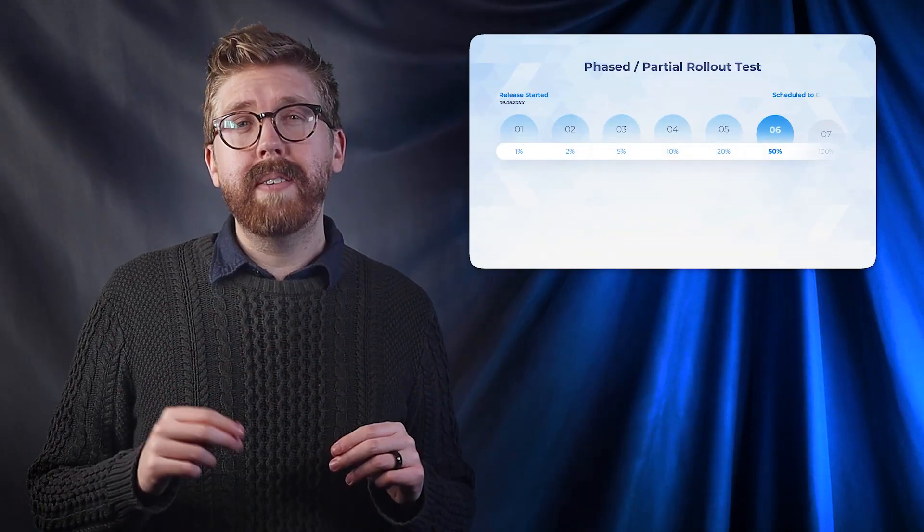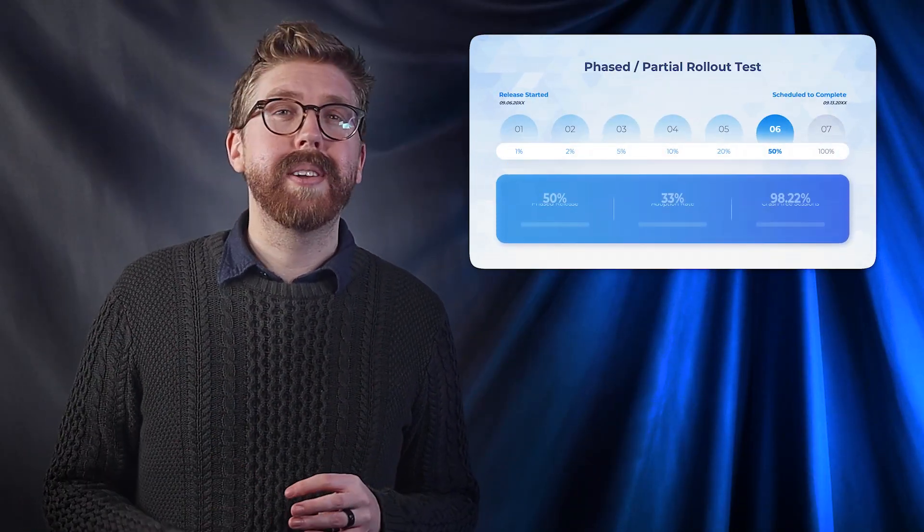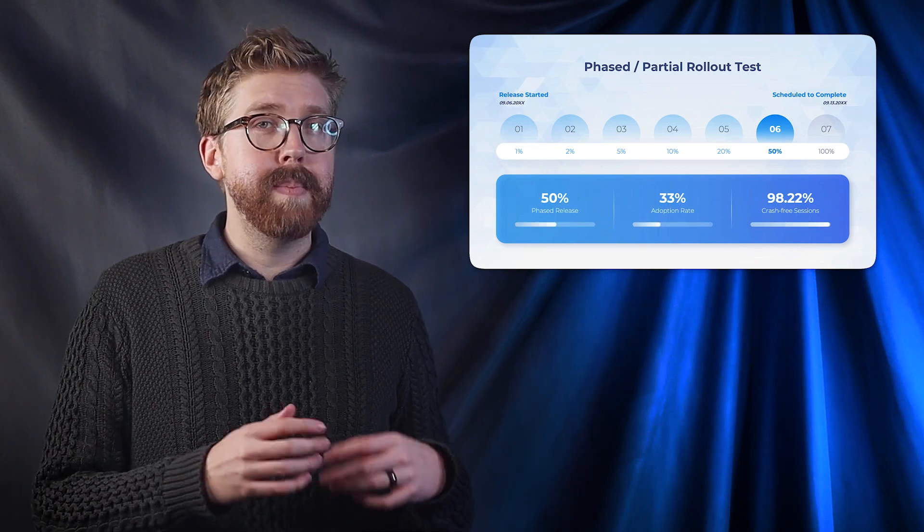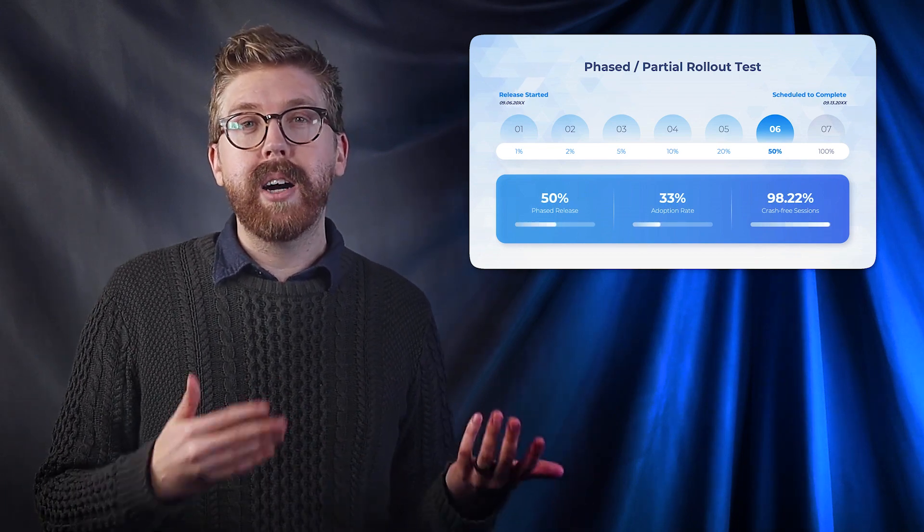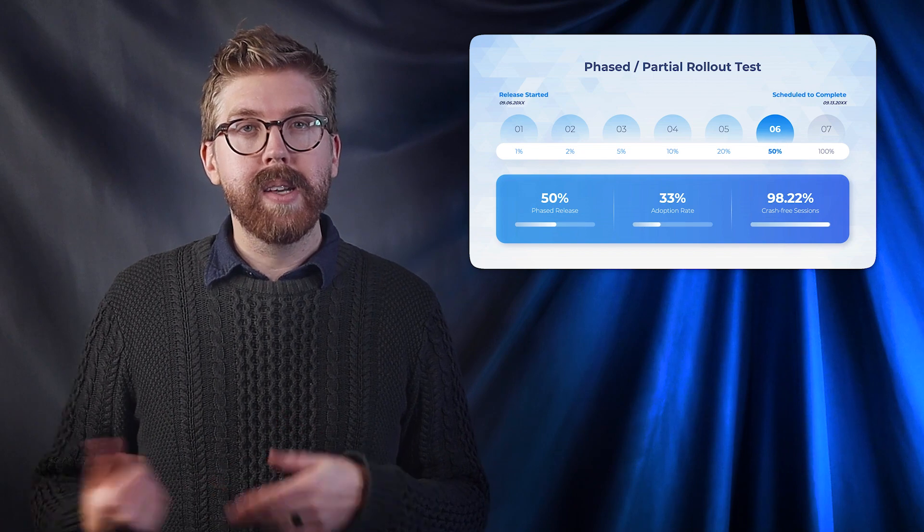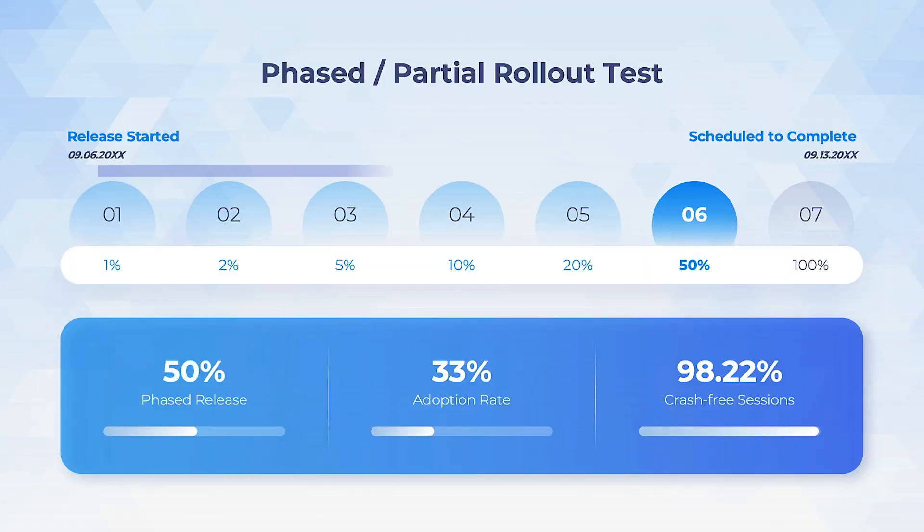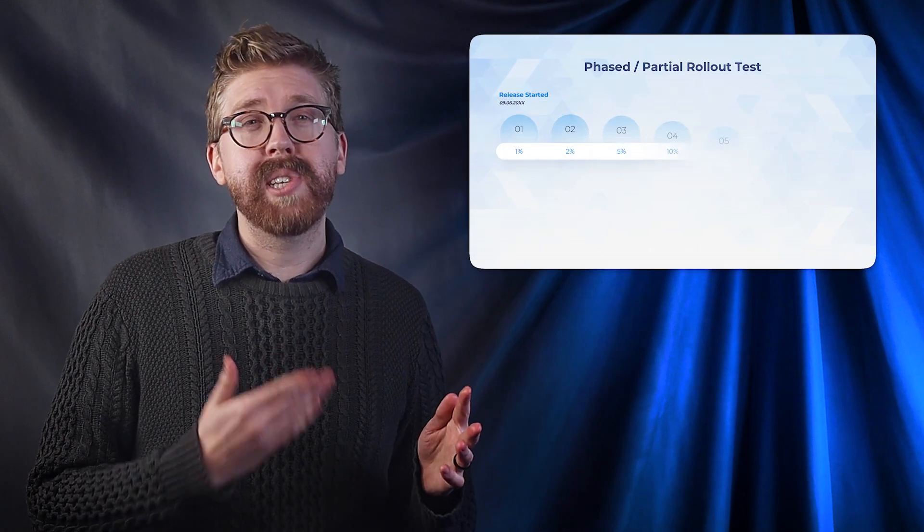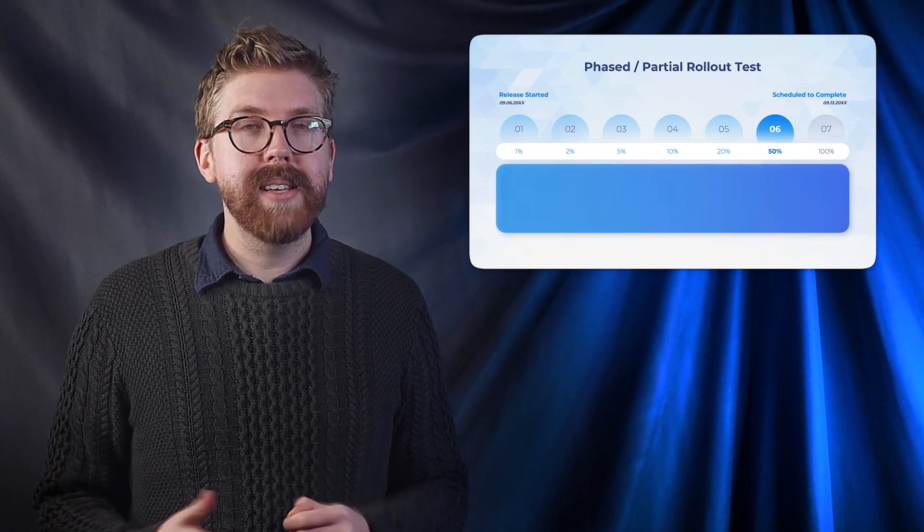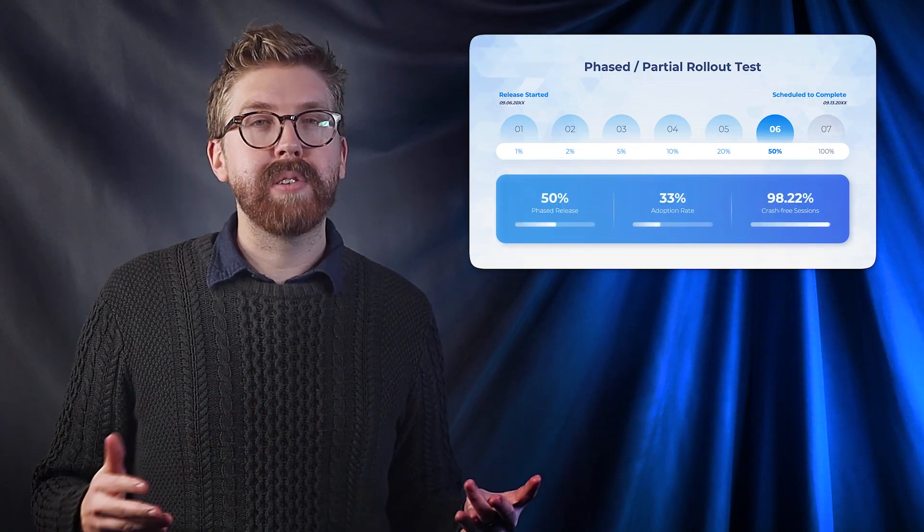Instead of all that, companies will often test a new launch via what's called a phase rollout. This is to dip their toes in and feel for any unforeseen mistakes or bugs. Break down the rollout into phases and what percentage of the users will actually receive the new release and at what phase. If all goes well, then proceed to the next phase. Otherwise, fix any hiccups before rolling out to more users.